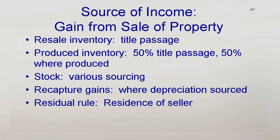Several different rules apply for determining the source of income from selling property. Where the property is inventory purchased by the taxpayer and resold, the income is 100% sourced to the place of sale. Place of sale means where title passed. Thus, a sale executed from a U.S. warehouse is sourced as U.S., even though the goods are shipped overseas.